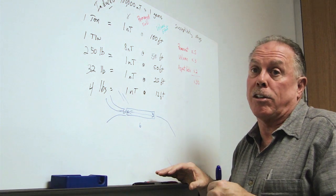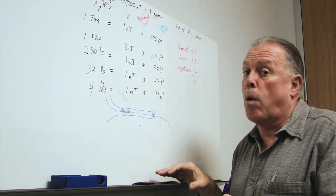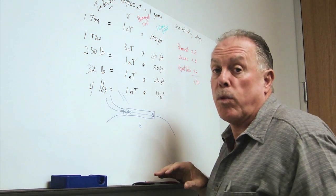This means that we can see things that are essentially 30 times smaller than the basic rule of thumb would indicate.